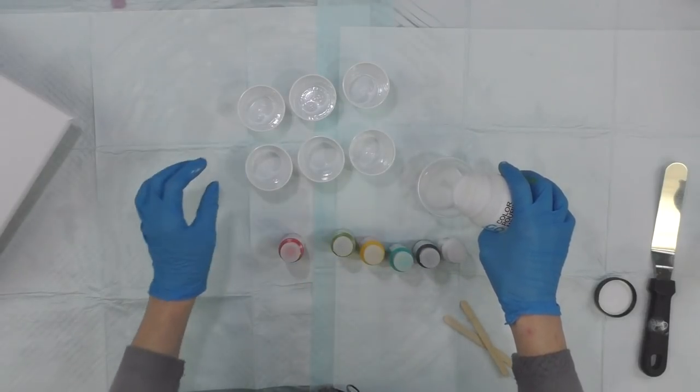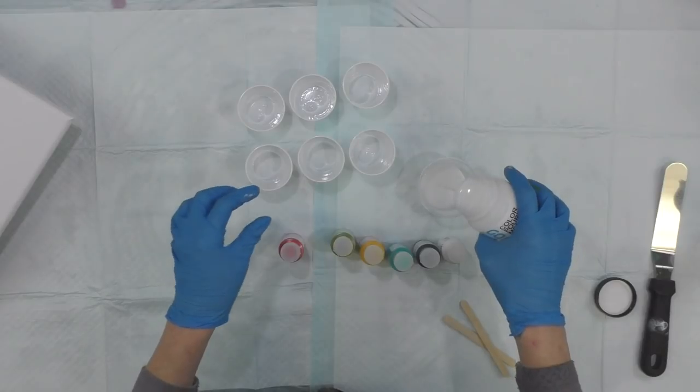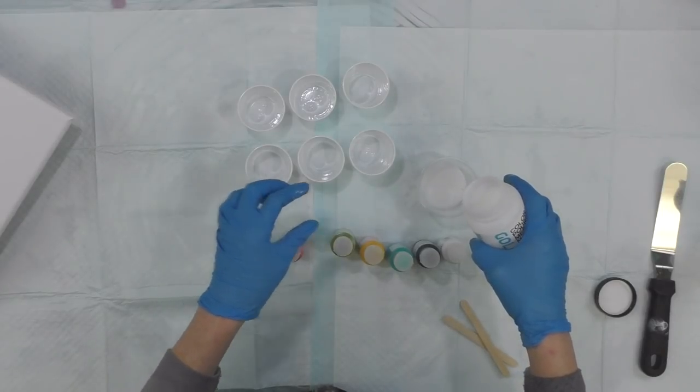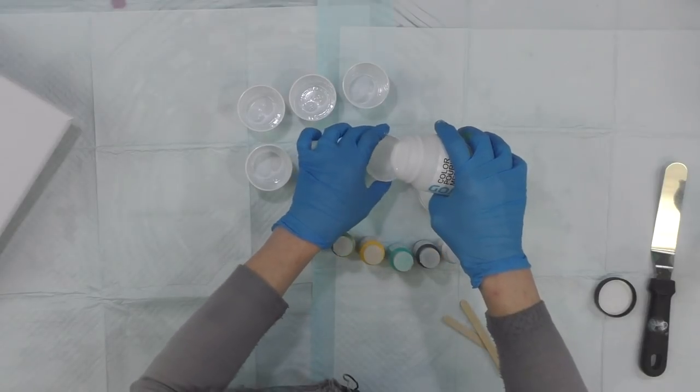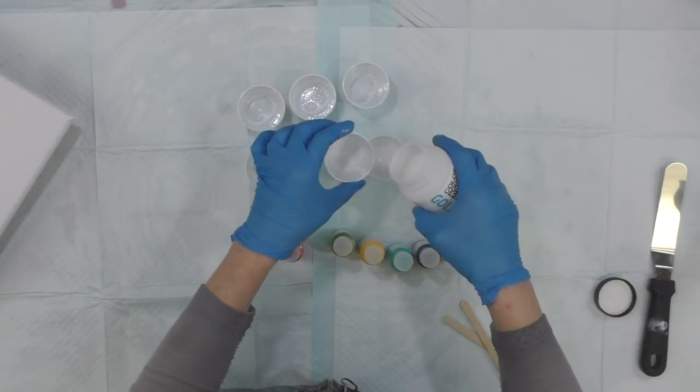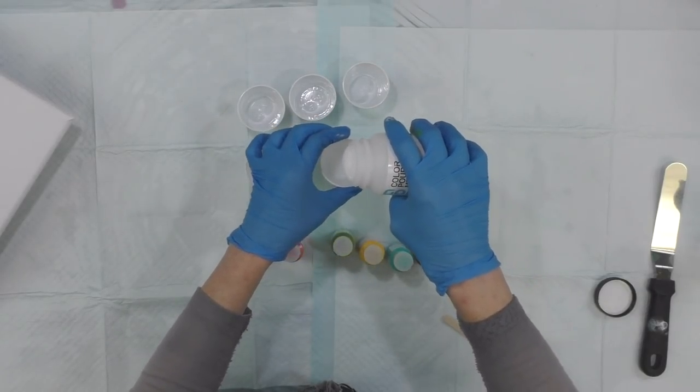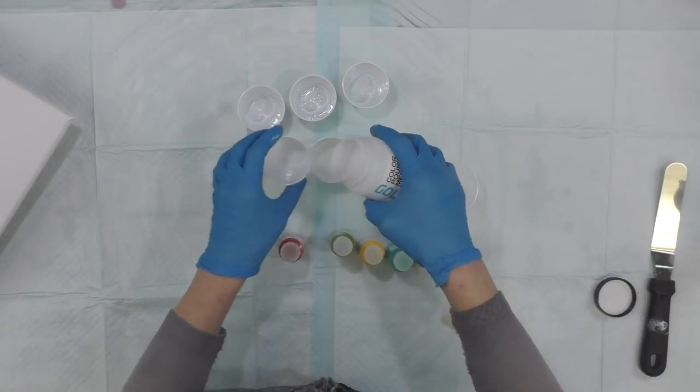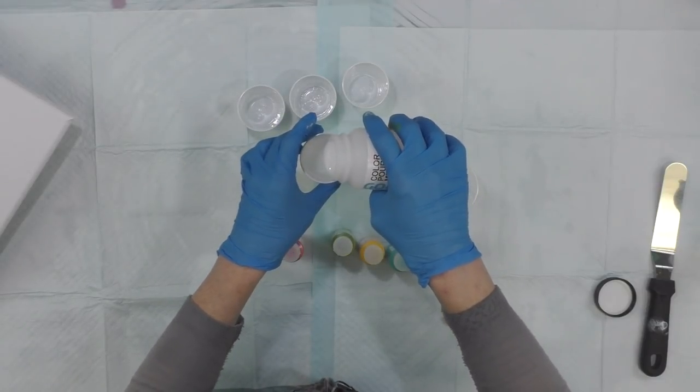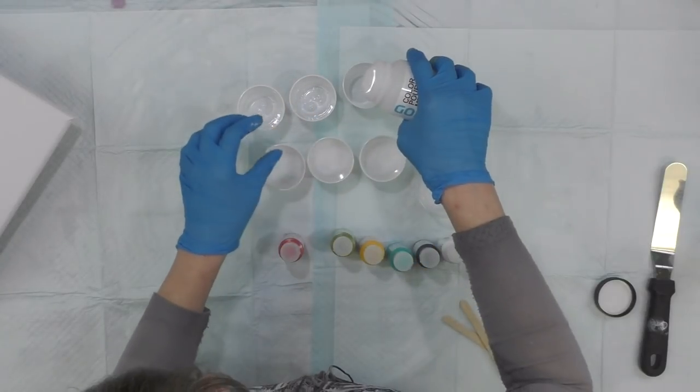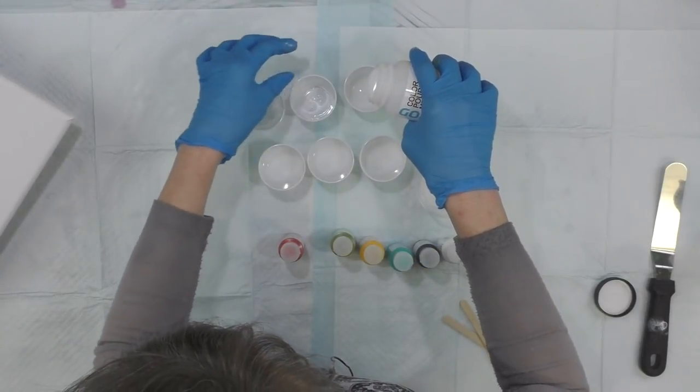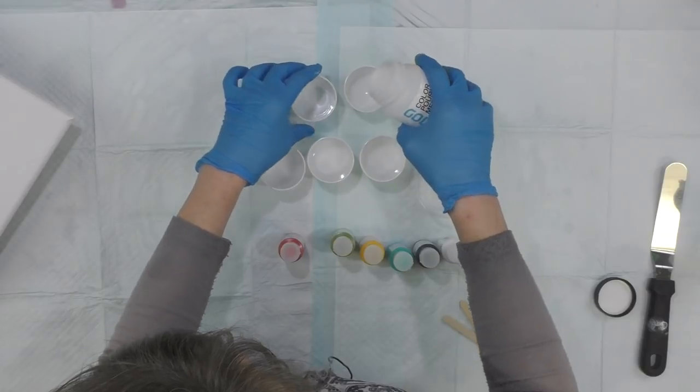And this is going to be totally different from what I'm used to because this is 10 parts to one part. So I'm going to pour just enough of what I think I need to do this pour. And because I'm not used to using 10 parts to one part, I usually use one to one ratio, this is going to be a little different for me.